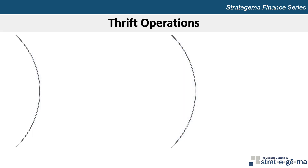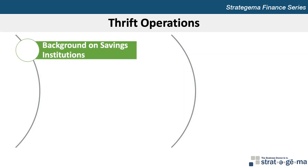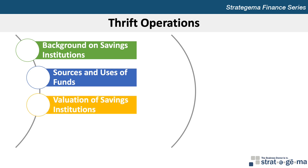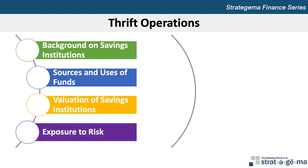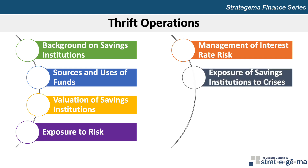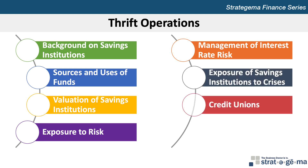Chapter 21 includes seven learning objectives. First, to describe the ownership and regulation of savings institutions. Second, to identify the key sources and uses of funds for savings institutions. Third, to explain the valuations of a savings institution. Fourth, to describe the exposure of savings institutions to various types of risk. Fifth, to explain how savings institutions manage interest rate risk. Sixth, to describe how savings institutions have been exposed to recent crises. And seventh, to provide a background on credit unions, including their main sources and uses of funds.